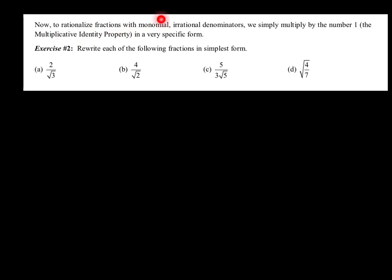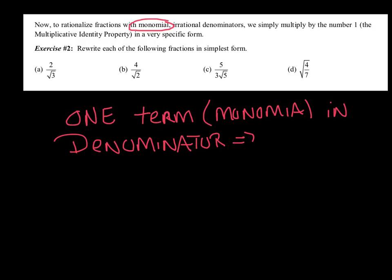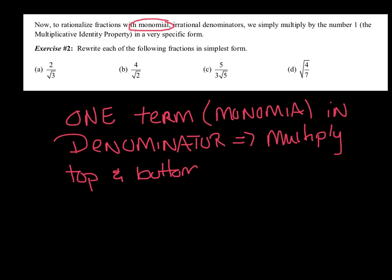Now, to rationalize fractions with monomial irrational denominators, we simply multiply by the number 1 — the multiplicative identity property — in a very specific form. Here's how we write these in simplest form. When you have a monomial, meaning one term, in the denominator, we're simply going to multiply the top and bottom by itself.